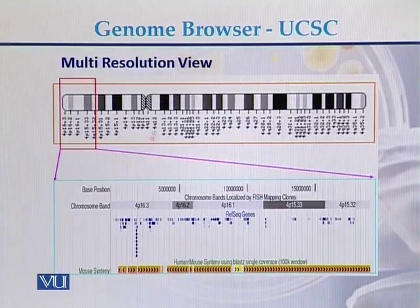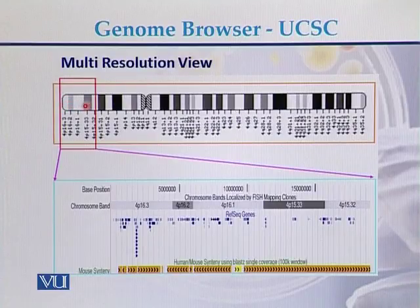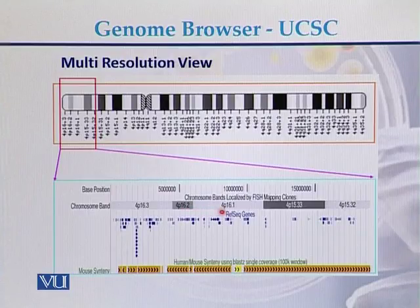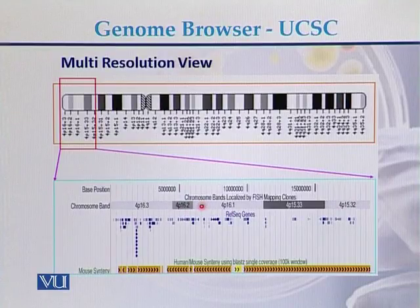This is a multi-resolution view in which we can see different banding patterns — light bands and dark bands. If we magnify it, we can see that this is chromosome number four and the band is 4P16.3. This is the dark band 4P16.2, then the light band 4P16.1. This banding pattern can be seen at the UCSC genome browser, and it is called the multi-resolution view.